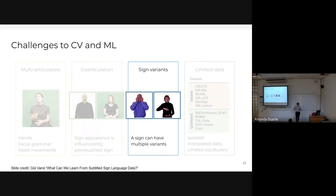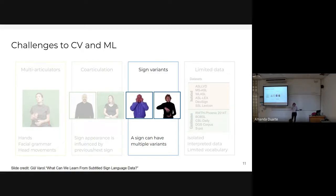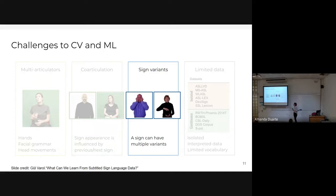Another problem for machine learning is sign variance, where the same meaning can have different signs depending on context. For example, the sign for 'wash' changes depending on whether you're washing dishes, your face, or clothes — the latter imitates a washing machine movement. You cannot assume a single sign covers all contexts. This also varies by region and person, making it very hard to capture all variants in a dataset.